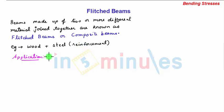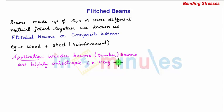Application: Wooden beams, also called timber beams, are highly anisotropic, that is they are very weak in tension although they are quite good under compression.